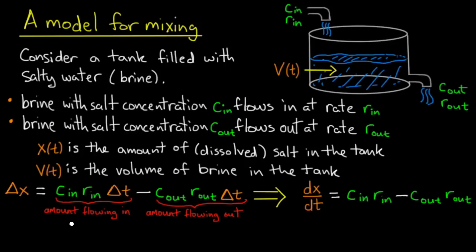How do we determine how much flows in and how much flows out? We know the rate at which brine flows in, and we know the concentration of salt in that brine. Knowing these two quantities, we actually know the rate at which the salt flows in. It's C_in times r_in.